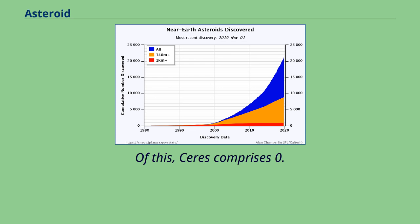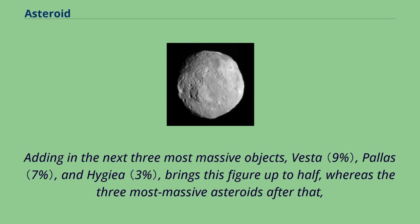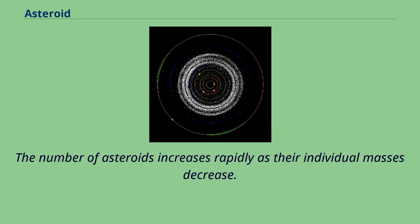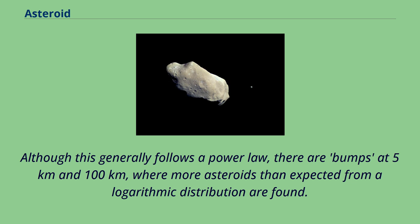Adding in the next three most massive objects — Vesta, Pallas, and Hygieia — brings this figure up to half, whereas the three most massive asteroids after that, 511 Davida, 704 Interamnia, and 52 Europa, constitute only another 3%. The number of asteroids increases rapidly as their individual masses decrease. Although this generally follows a power law, there are bumps at 5 kilometers and 100 kilometers where more asteroids than expected from a logarithmic distribution are found.